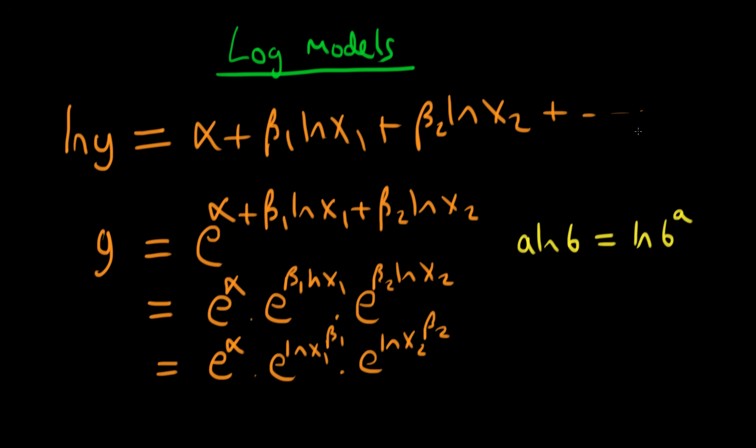It's looking quite complicated. How do we simplify this further? Well, by recognizing that e to the power log x is the same as x. That's just a simple log rule. So finally we arrive at a simpler form: y equals e to the alpha times x1 to the power beta 1 times x2 to the power beta 2.